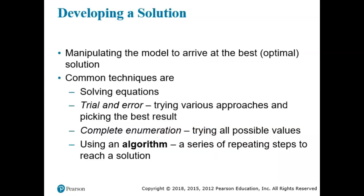Manipulating the model to arrive at the best optimal solution involves common techniques such as solving algebraic equations, trial and error — trying various approaches and picking the best result — complete enumeration, trying all possible values, or using an algorithm, which is a series of repeating steps in order to reach a solution.